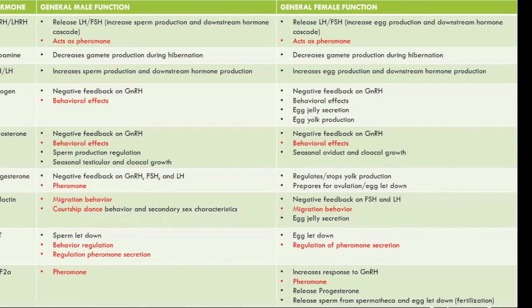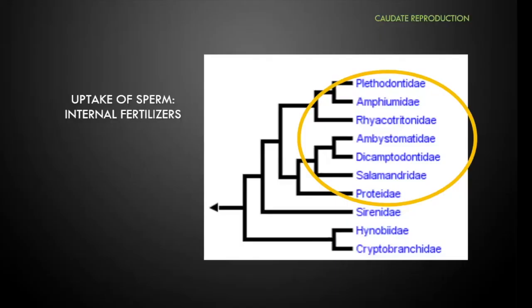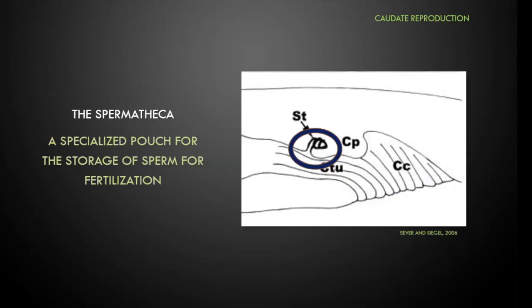For reference, the hormone table now highlights which hormones act as pheromones or trigger behavioral effects. Moving on: sperm uptake is important especially if you're considering artificial insemination, but even for IVF you should understand how it normally works. There is a very important organ in female salamanders called the spermatheca — a little pouch off the side of the cloaca designed for storing sperm.